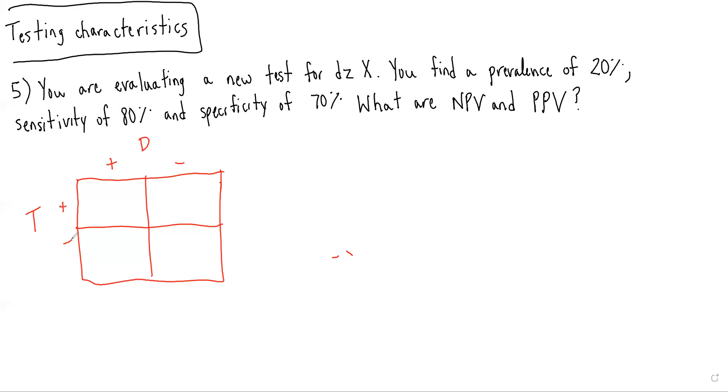In cases like this, where they give you proportions and they don't tell you the total sample size, I personally like to pick a nice round number. And my default is 100. So let's just assume that there's 100 people in this study.